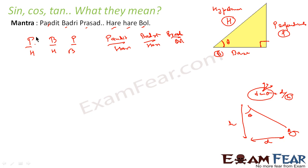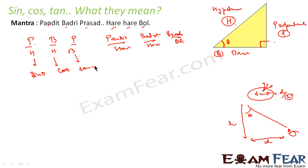So in this scenario, P divided by H is nothing but sine theta. Using our mantra — Pandit Badri Prashad — this gives sine theta. B divided by H is cosine theta. And P divided by B is tan theta. This is our tip to remember: Pandit, Badri, Prashad, Hari, Hari, Bool.